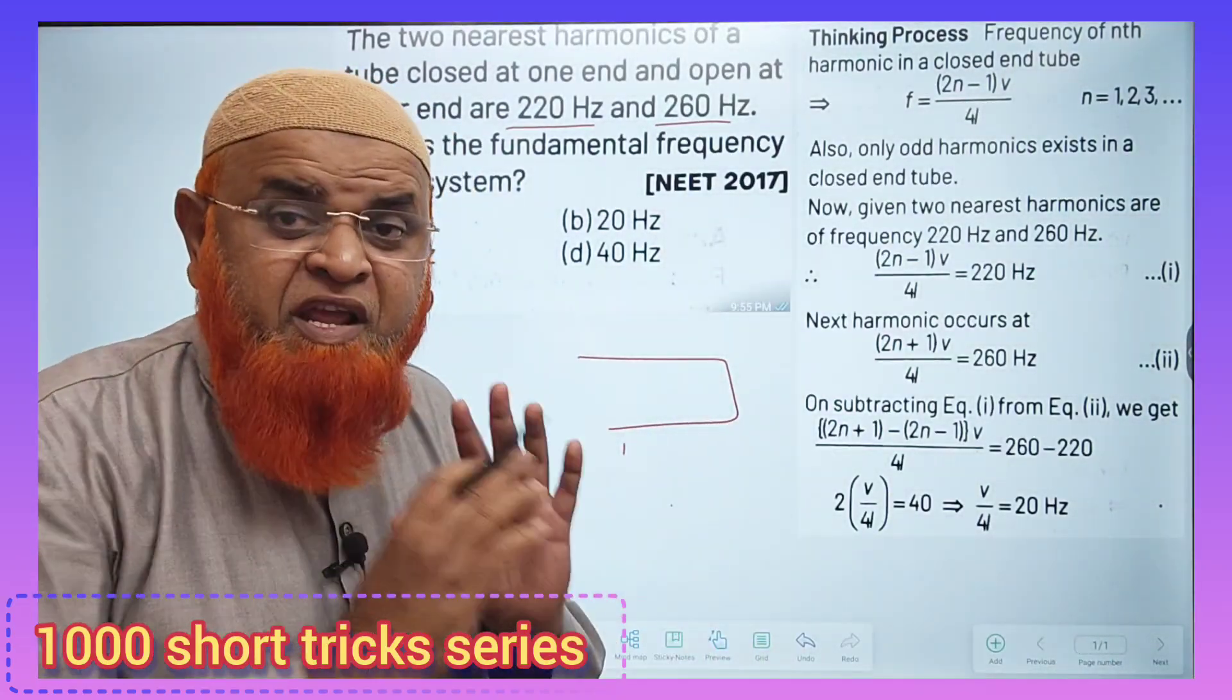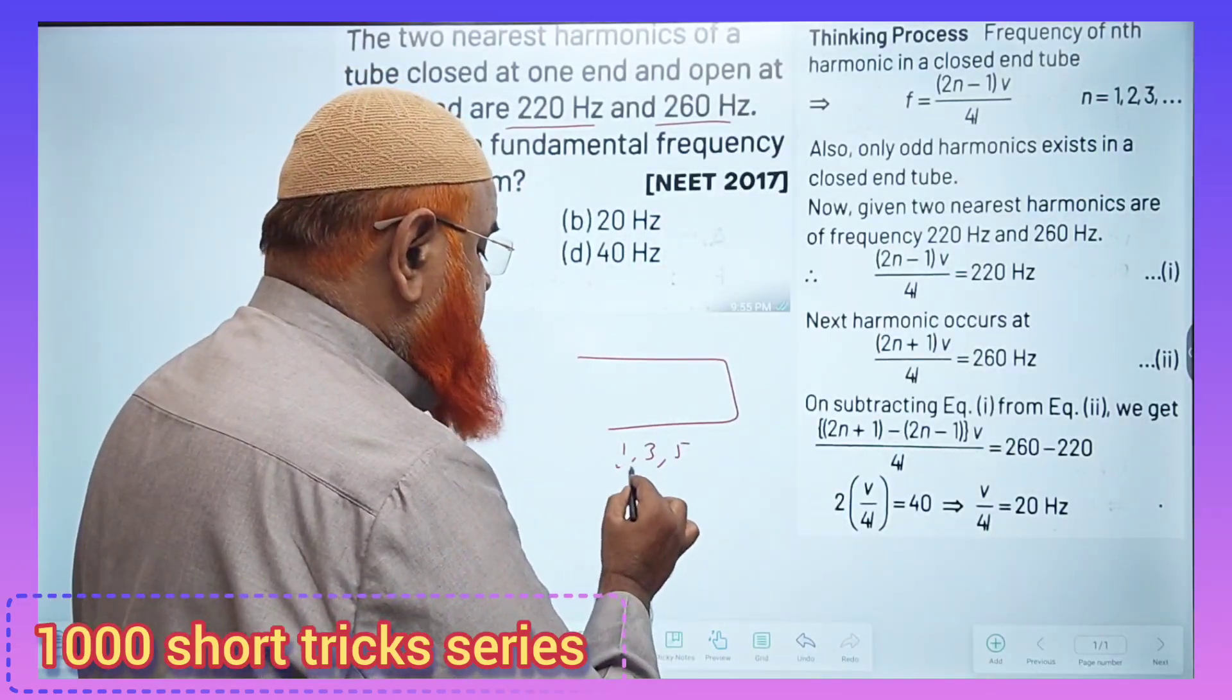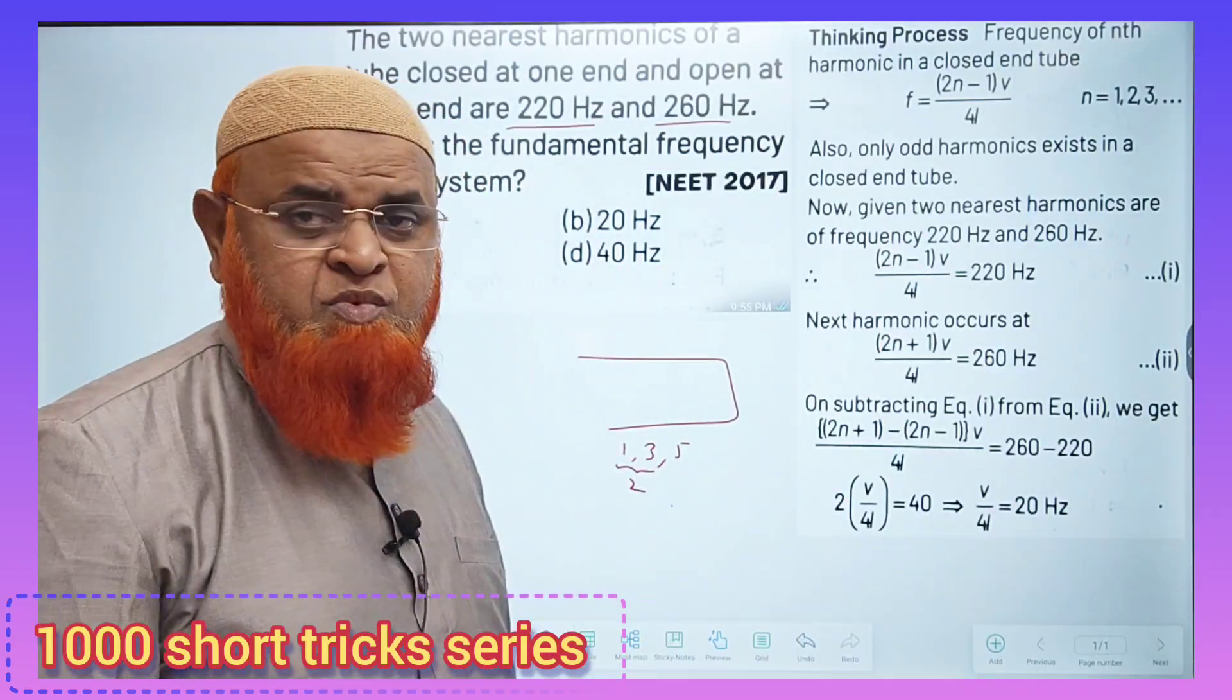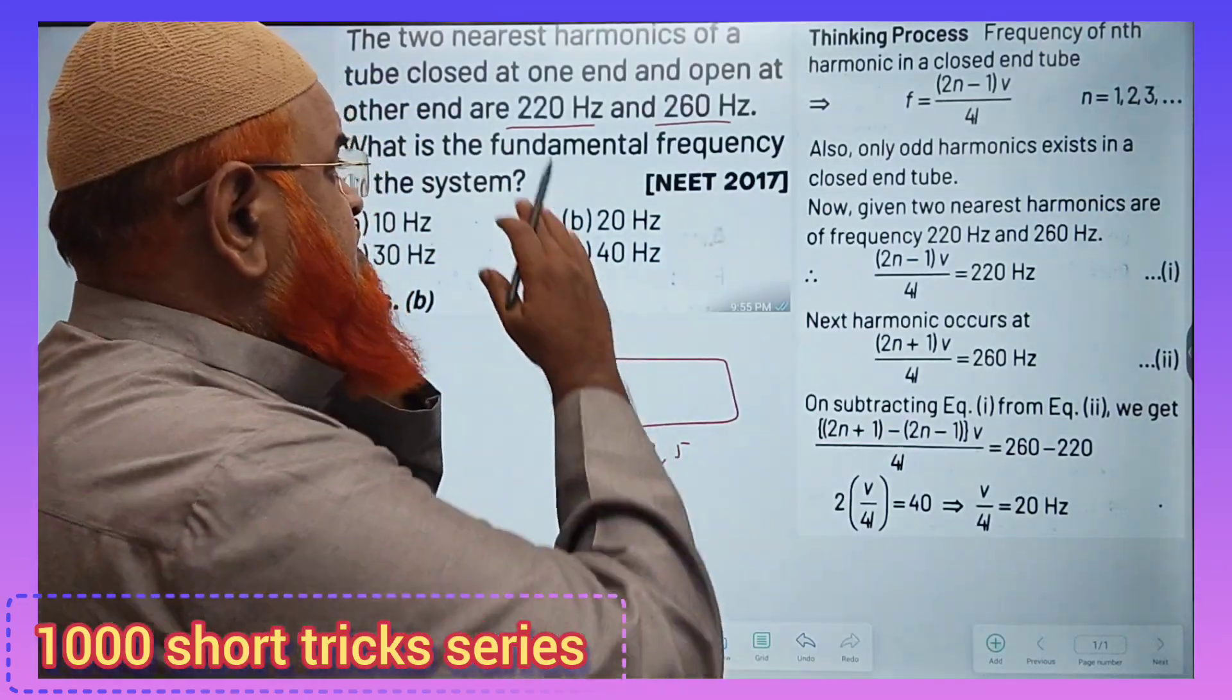In a closed pipe, frequencies are in the ratio 1:3:5. That means there is a gap of 2 between successive harmonics. He is giving the successive frequencies 220 Hz and 260 Hz.